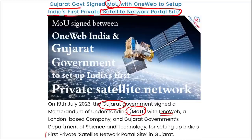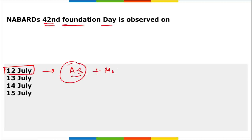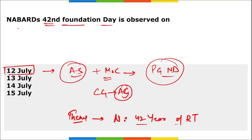NABARD's 42nd Foundation Day is observed on 12th of July. Amit Shah, our Union Minister and Minister of Cooperation, was the chief guest at the event held at Pragati Maidan in New Delhi. The day was marked by a series of events throughout the country. The theme to remember is: 'NABARD — 42 Years of Rural Transformation.'